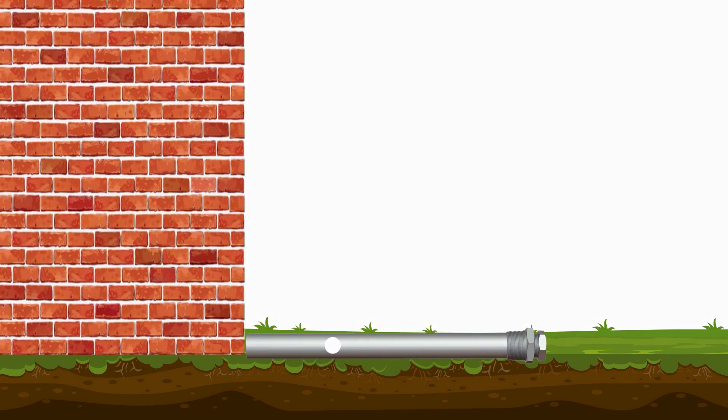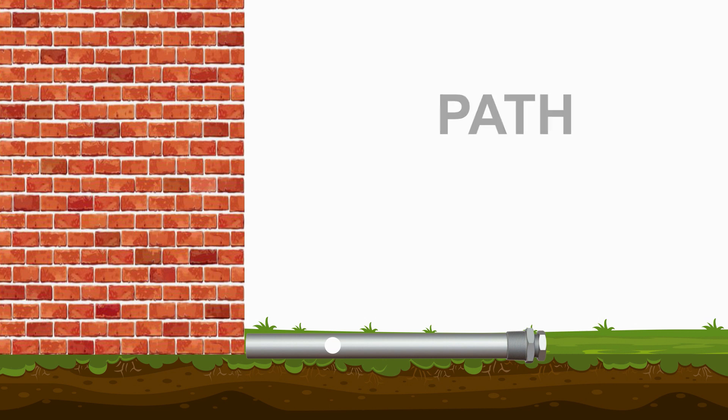Now we will focus on the white dot on the metal. Suppose I tell you to observe the path taken by the white dot — how will it look like? Let's watch the animation once again, but now I will lay emphasis on the white dot. Let's make it red so that you can see it better.